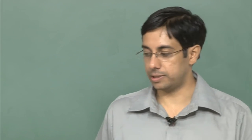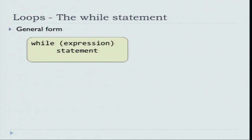In this session, we will look at loops in the C programming language and we will start with a very basic kind of loop which is known as the while statement. The general form of a while statement is similar to that of an if, which is that there is an expression and you say: while that expression, then do the statement.